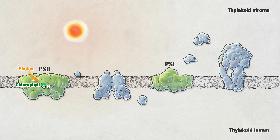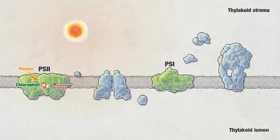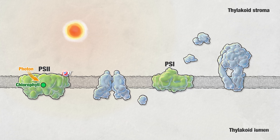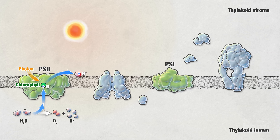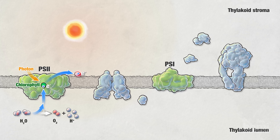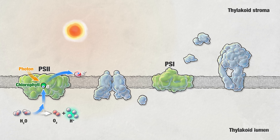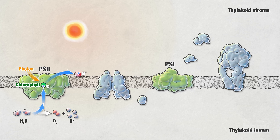The thylakoid membranes contain specialized molecules that work together to perform the light reactions. Light is absorbed by protein pigment complexes called photosystems. There are two photosystems: photosystem I and photosystem II. The photosystems transform light energy to chemical energy by exciting and then shuttling electrons from molecule to molecule in a chain-like fashion on the thylakoid membrane. This process is called an electron transport chain.